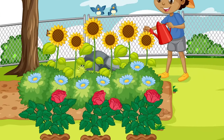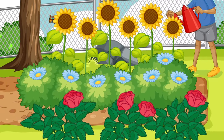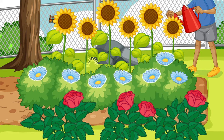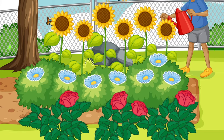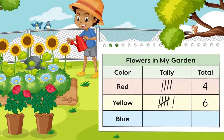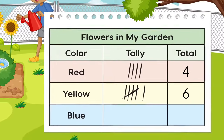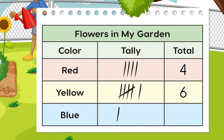Finally, how many blue flowers are there? One, two, three, four, five, six, seven. There are seven blue flowers. We can show seven in the tally chart with a group of five marks and two marks like this. Five and two make seven.